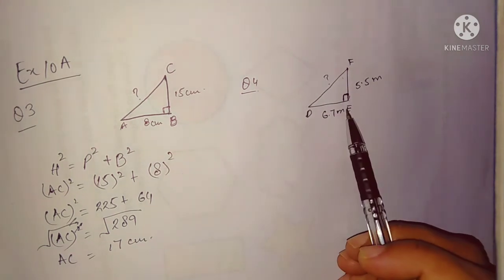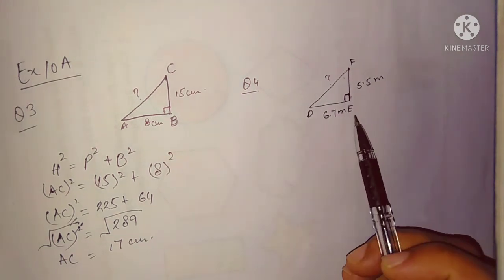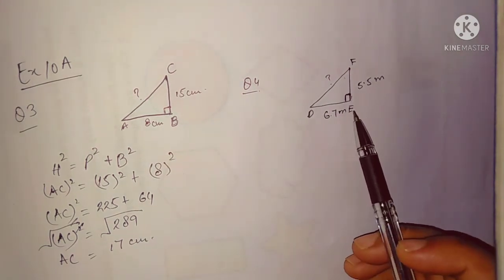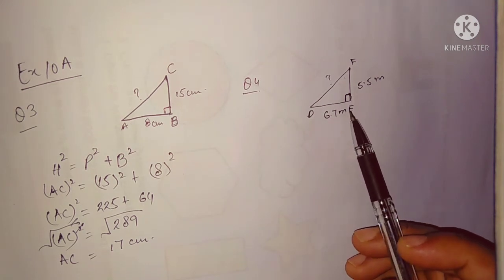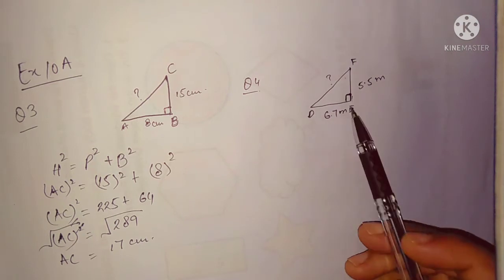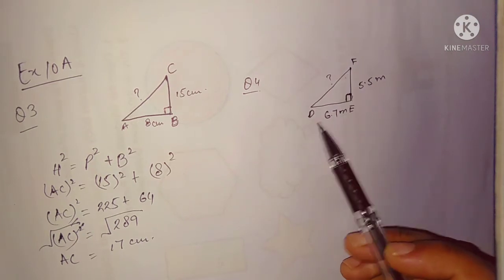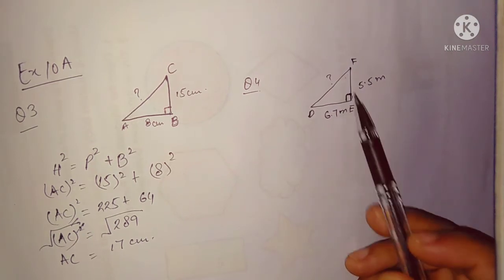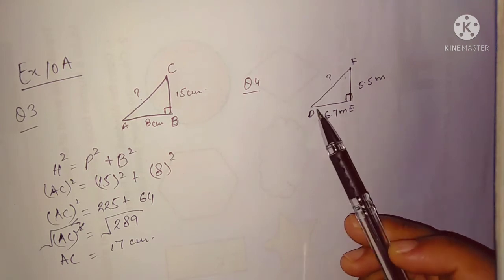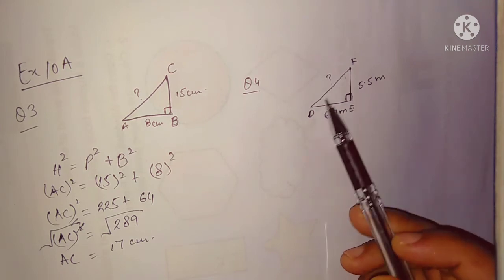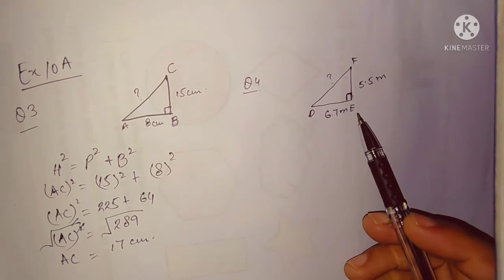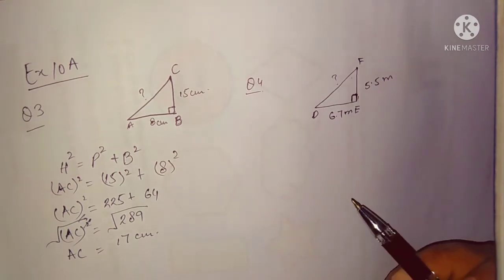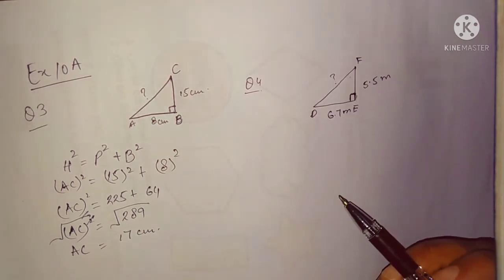The 90-degree angle is at E, so this is D and this is F — triangle DEF. DE is equal to 6.7 meters and EF is equal to 5.5 meters. You have to find out the hypotenuse, which is DF. Once again you will use the Pythagorean theorem.